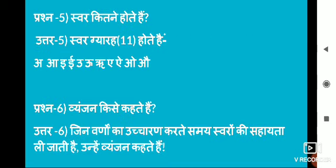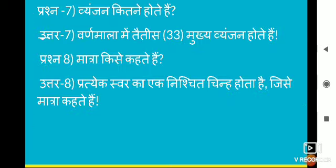Swar kitne hote hain? Swar 11 hote hain. Vyanjan kise kahate hain? Jin Varnon ka uchcharaN karte samay Swaron ki sahayata li jaati hai, unhe Vyanjan kahate hain. Vyanjan kitne hote hain? Varnamala mein kul 33 mukhya Vyanjan hote hain.